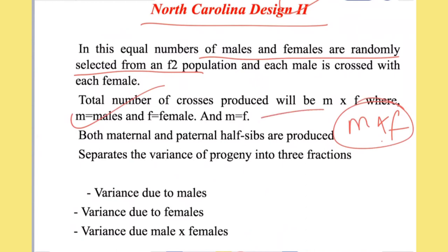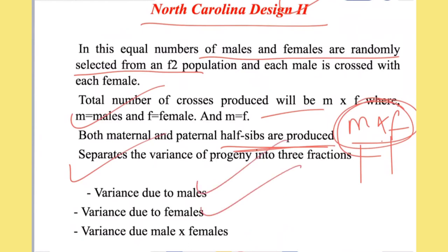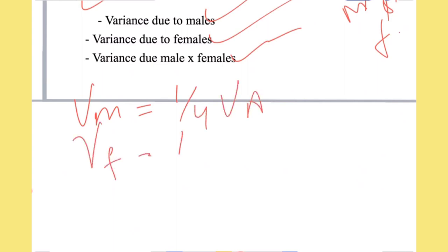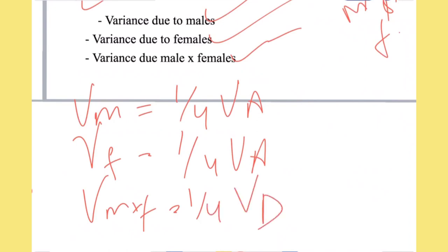The total number of crosses produced in NCD2 is M × F (males multiplied by females), where M and F are equal. Both maternal and paternal half-sibs are produced. NCD2 separates the variance of progeny into three fractions: variance due to male, variance due to female, and variance due to male × female interaction. In NCD2, variance due to male equals one-fourth of additive variance, variance due to female equals one-fourth of additive variance, and variance due to male × female interaction equals one-fourth of dominance variance.